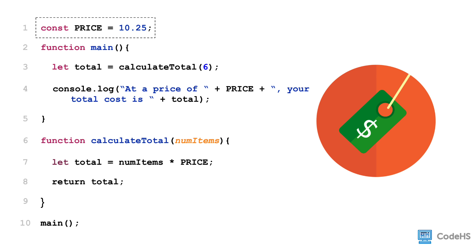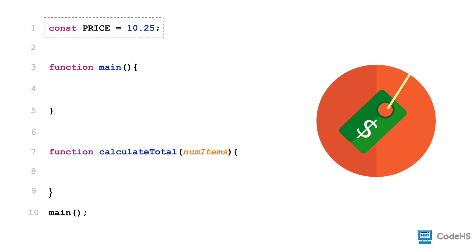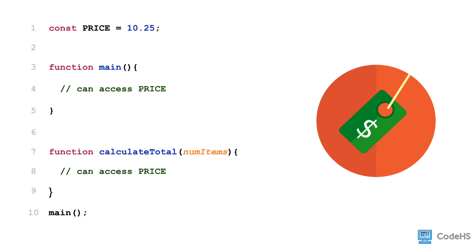In programming, we call this type of variable a global variable. A global variable is a variable that is created outside of a function. Its scope is the entire program, which means all parts of the program can access it. So by creating the variable price outside of a function, it is accessible in the main function, in the calculateTotal function, and outside of any function.